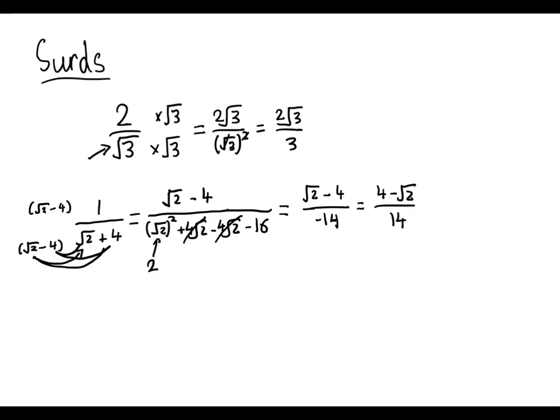And that's how you rationalize more complicated examples. You just multiply by what we call the conjugate of the denominator. So we just replace the plus with a minus. Or if we had root two minus four, we'd multiply by root two plus four.